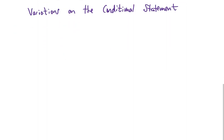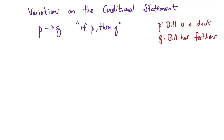So we know that the basic conditional statement looks like this. It reads if P then Q. And maybe for this problem we can make up statements for P and Q. If the statement P is Bill is a duck and Q is Bill has feathers. Then this conditional statement would read if Bill is a duck then Bill has feathers.